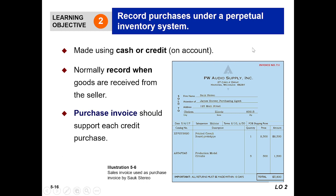Number one: purchases are made using cash or credit on account. Number two: transactions are normally recorded when goods are received from the seller under the perpetual inventory system — when we collect, receive, purchase, or buy our goods, that is when we record.